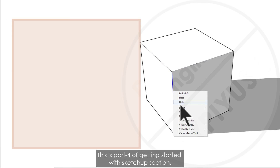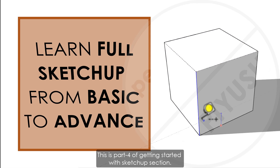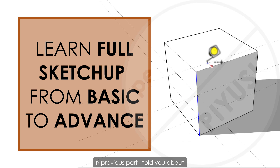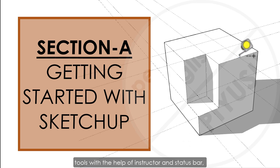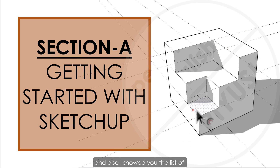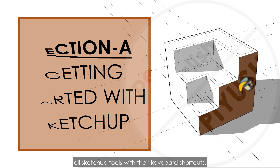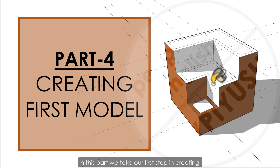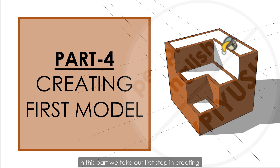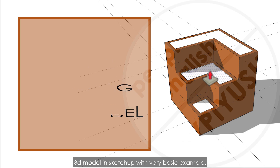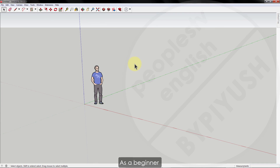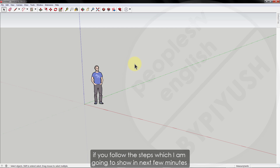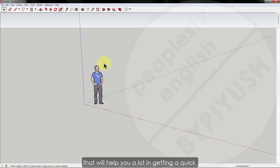Hello all, welcome back. This is part 4 of getting started with SketchUp. In the previous part I told you about how to use SketchUp tools with the help of the instructor and status bar, and also showed you the list of all SketchUp tools with their keyboard shortcuts. In this part we take our first step in creating 3D modeling in SketchUp with a very basic example. As a beginner, if you follow the steps I am going to show you in the next few minutes, that will help you get a quick overview of the basics of modeling.